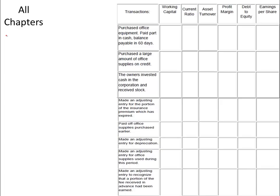Continuing with the impact of transactions on ratios: we purchase office equipment, which means our property, plant, and equipment is increasing. We paid part in cash, which means our current asset is decreasing, and the balance is payable in 60 days, which means our current liabilities are increasing.